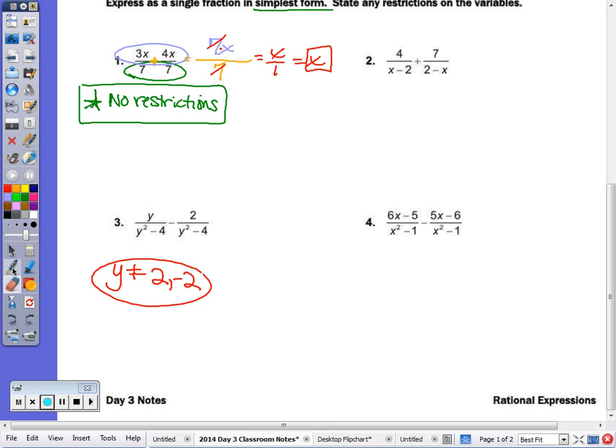Now to actually subtract, we keep the denominator the same. And then I combine the numerator, or subtract. Because you can't take away 2 from y, we just write the difference, y minus 2. So that's the answer.